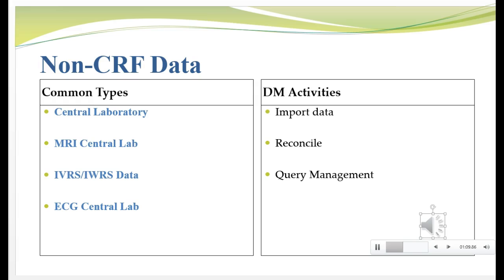Common types of non-CRF data include central laboratory data — basically hematology, urinalysis, and blood chemistry panels. Some common central labs are LabCorp and Covant; these groups contract with CROs and drug companies running clinical trials, you send all your lab samples to them, and they send a data set back to you to reconcile against your clinical database. Another very common central lab is an MRI lab, as well as ECG labs and filter monitoring labs — any place where a sample can be read and a data set created and sent back.